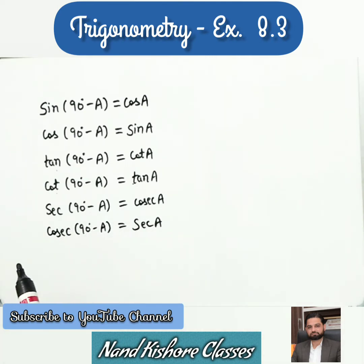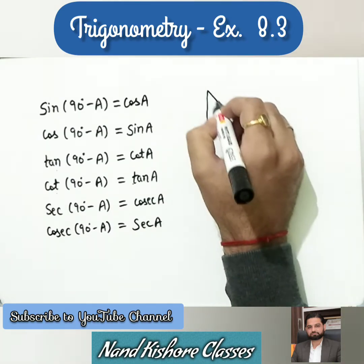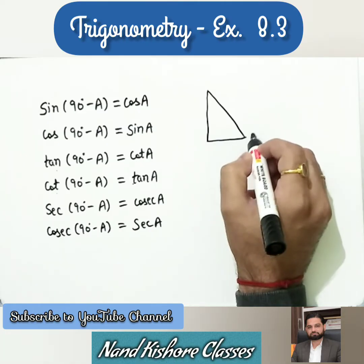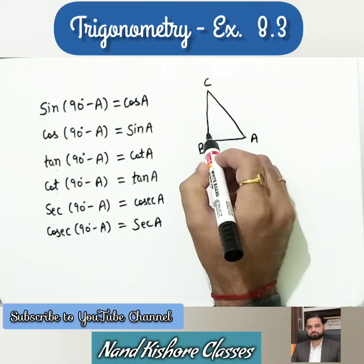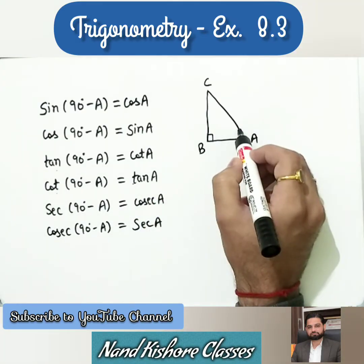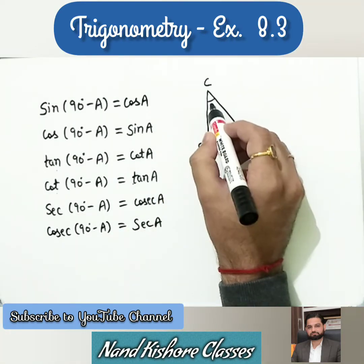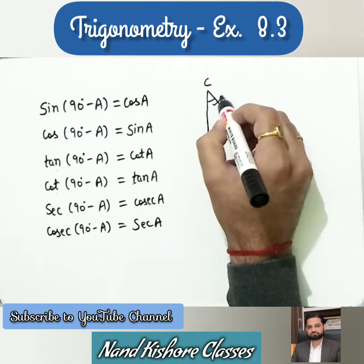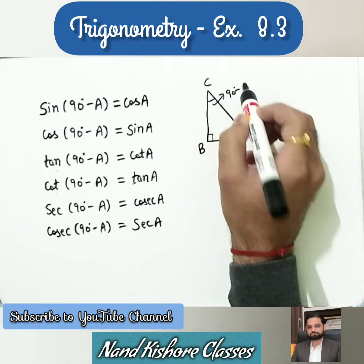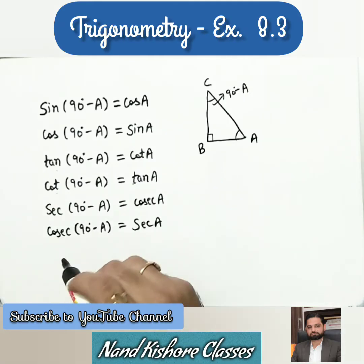We can do the proof as well — it is very easy. Let us suppose we have a right angle triangle ABC. This angle is 90 degrees, this is angle A and this is angle C. I can write angle C as 90 minus A. How? It is very easy.